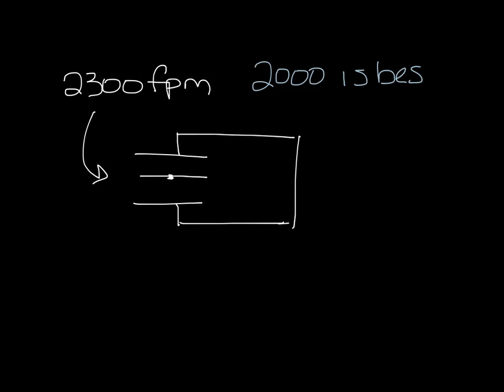So let's draw a single duct box. And this is the damper in the inlet. In the podcast on VAV box sizing, I said that you don't want to exceed 2,300 feet per minute in the inlet. Ideally, you'd be closer to 2,000 feet per minute.